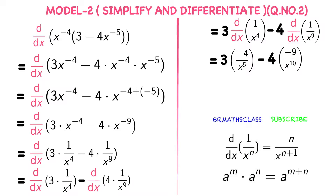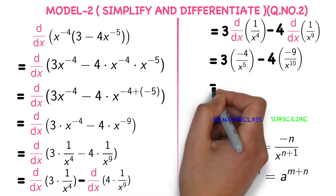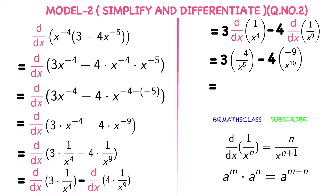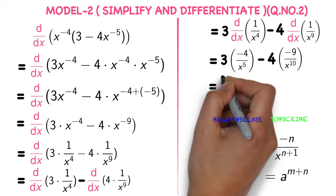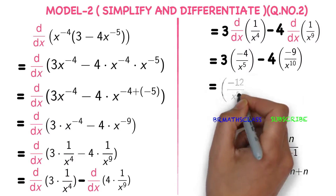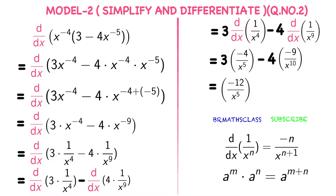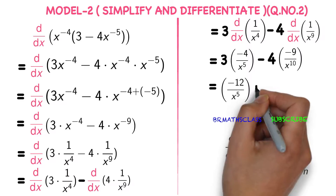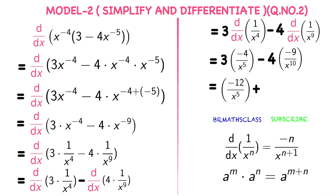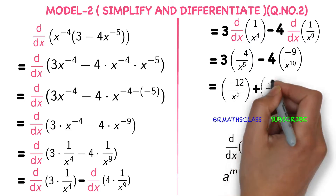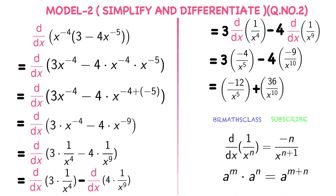That's it. We can write one more simplification step: multiply 3 into minus 4 to get minus 12 divided by x power 5, minus of minus — plus — 4 times 9 is 36, so 36 divided by x power 10.